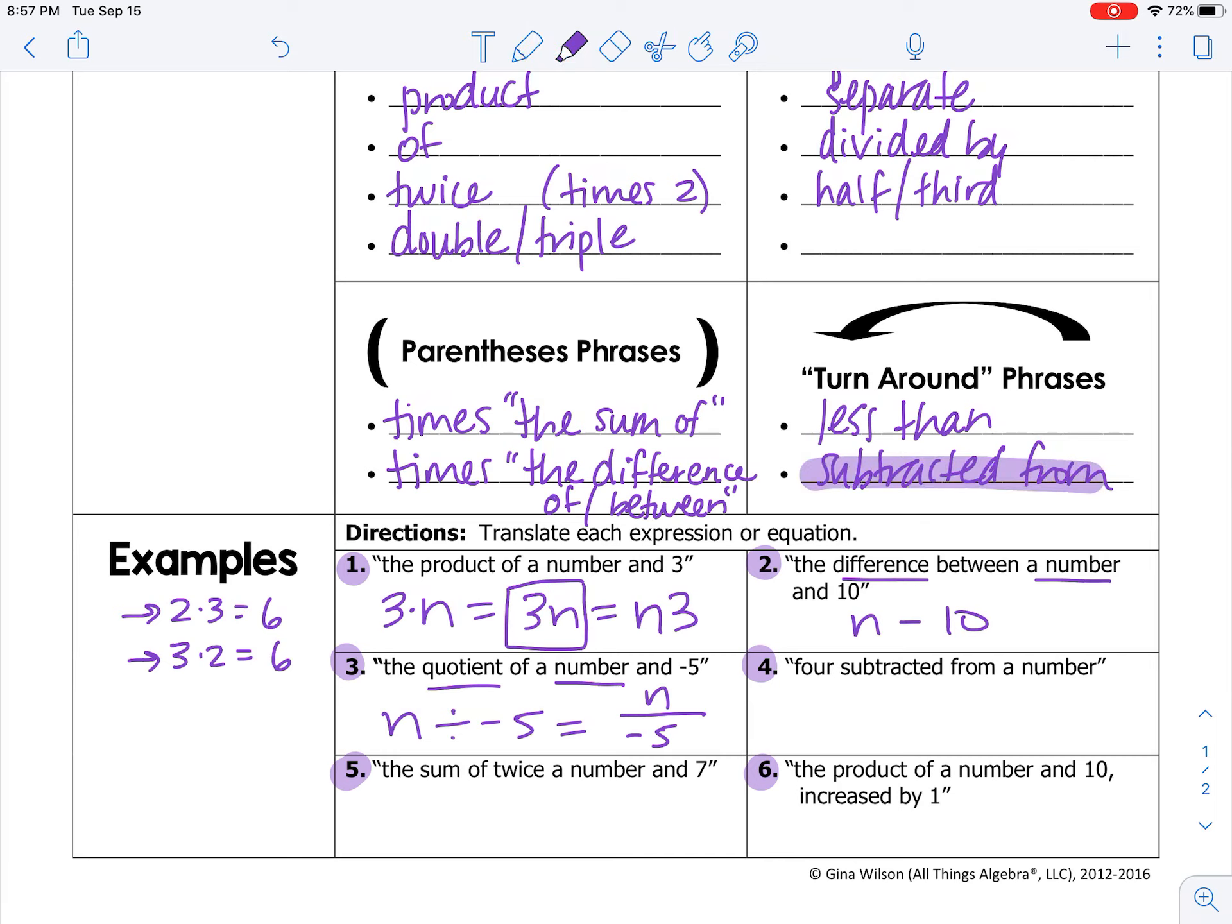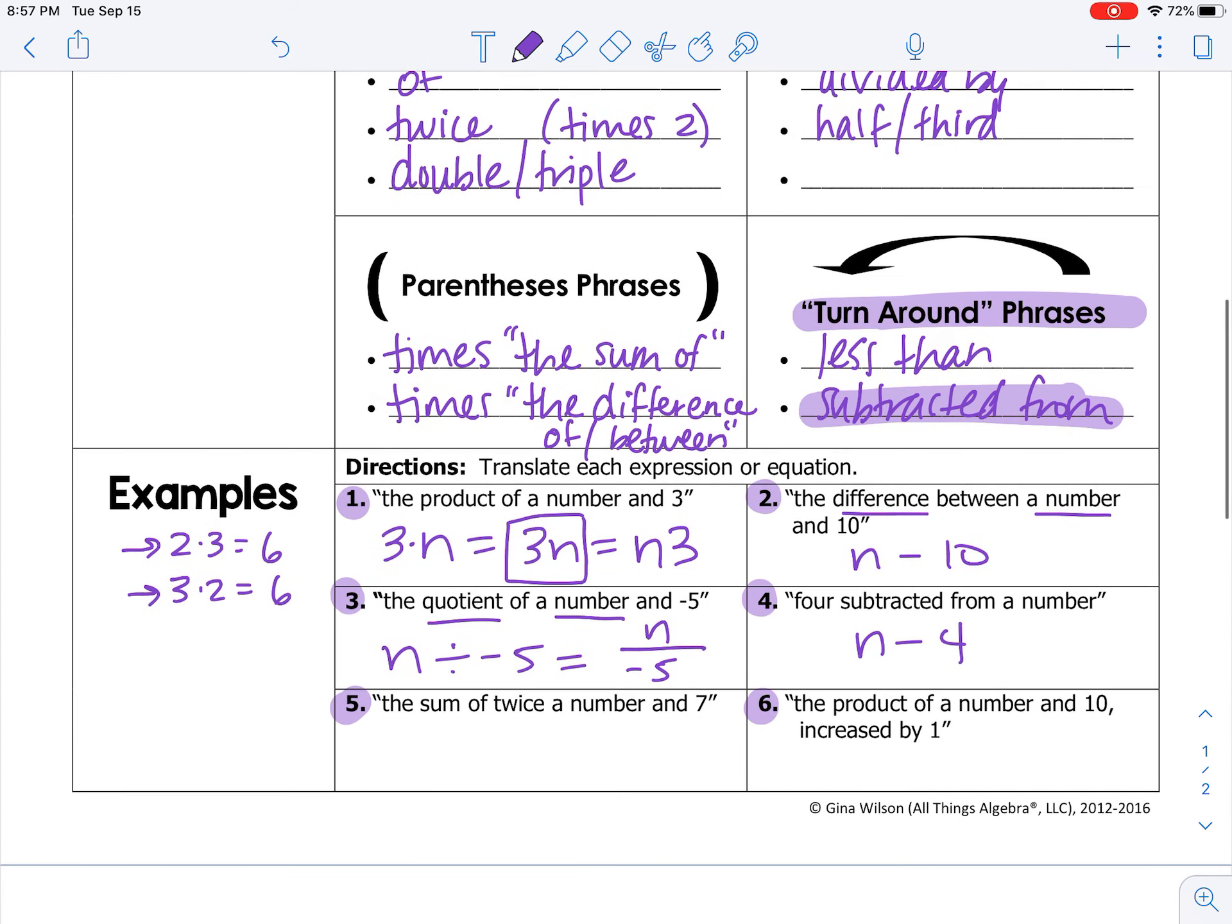Four subtracted from a number. So remember, subtracted from is one of our turnaround phrases. Four is first, but the turnaround phrase means we have to reverse the order. Turn the order around. N minus four. Four subtracted from a number.